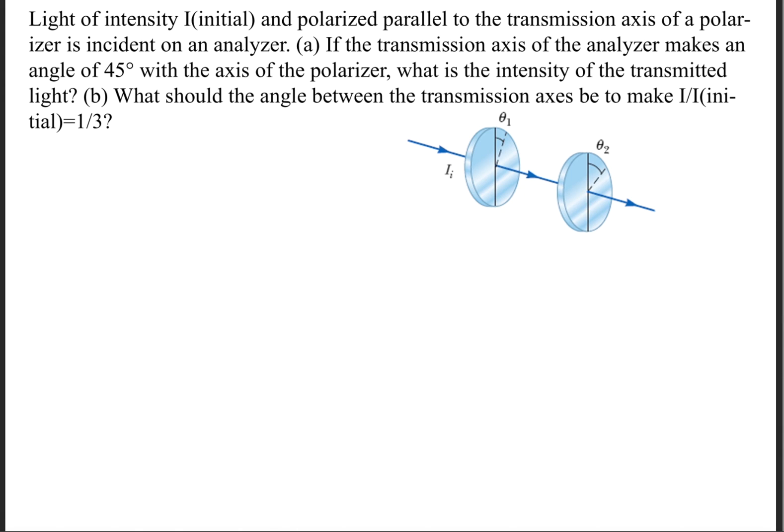To solve this question, we're going to use Malus's Law, which states that the intensity of unpolarized light going through a polarizer is equal to the initial intensity times the cosine squared theta.